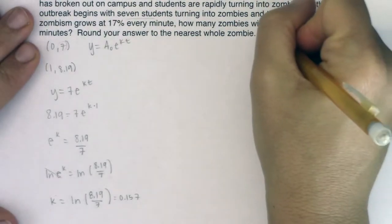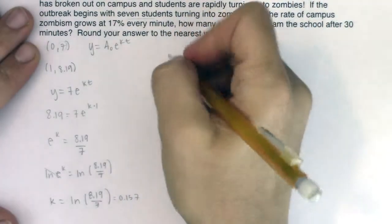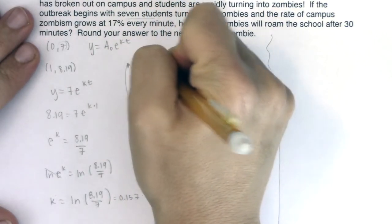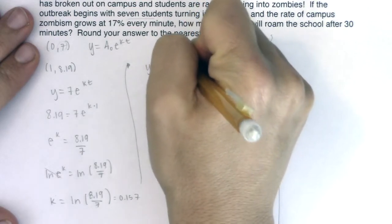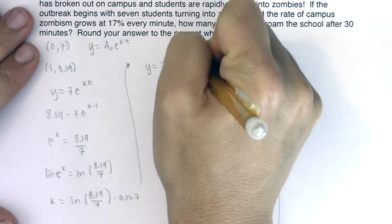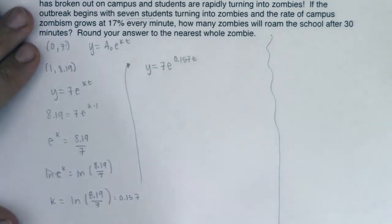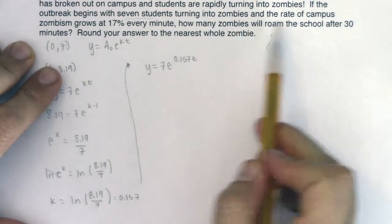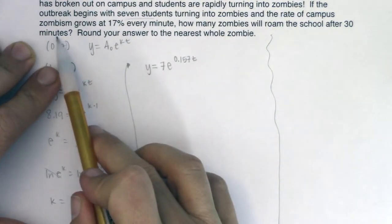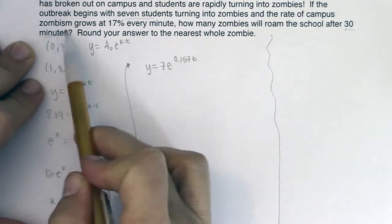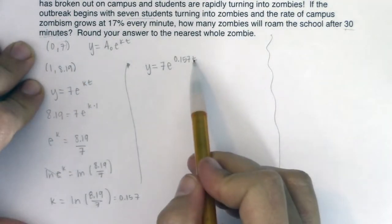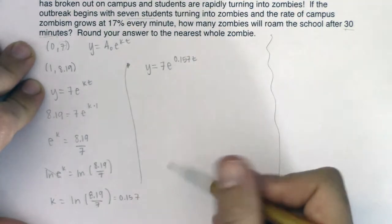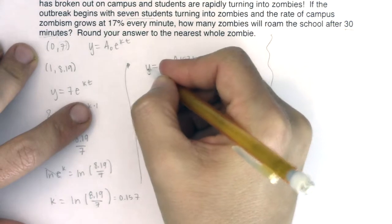Now I'm going to leave a little space because I want to do this problem in the other way also. All right so as I'm moving through this we will have y is equal now to 7e to the 0.157t. Okay great so I've got my model. Let's see what the question actually said: it said how many zombies will roam the school after 30 minutes. So 30 is the number I'm working with but I see that it's minutes, minutes is a t value not a y value so I'm actually going to plug this in for t.